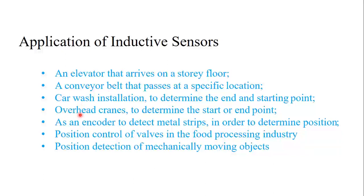Inductive sensors are also used in encoders to detect metal strips in order to determine position. They are used in the position control of valves in fluid industries, and also in the position detection of mechanically moving objects. These are some basic applications of inductive sensors.